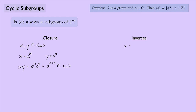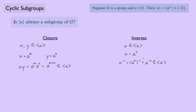For inverses, let X be in ⟨A⟩, so X = A^N for some integer N. Then X inverse is (A^N)^(-1) = A^(-N), and since -N is an integer, X inverse is also in the set. So we have both closure and inverses, meaning yes, ⟨A⟩ is indeed a subgroup — called the cyclic subgroup of G generated by A.